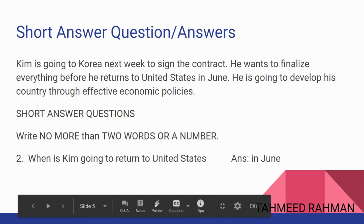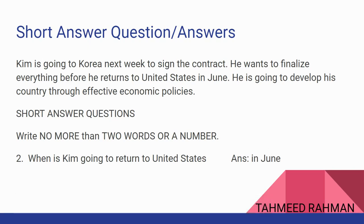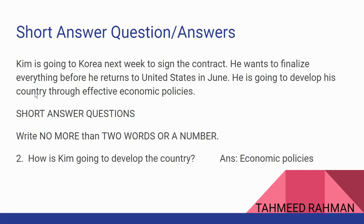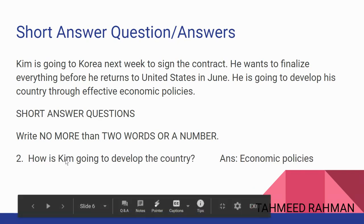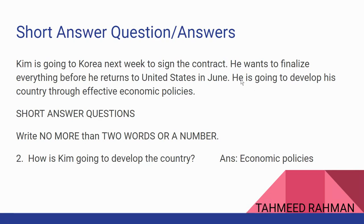Even if you don't write 'in,' they are still going to mark it correct. However, in some cases it's better to understand the correct use of prepositions. So writing 'in June' or just 'June' will both be accepted. For question three — how is Kim going to develop the country — the text states he is going to develop his country through effective economic policies, so the answer is 'effective economic policies.'